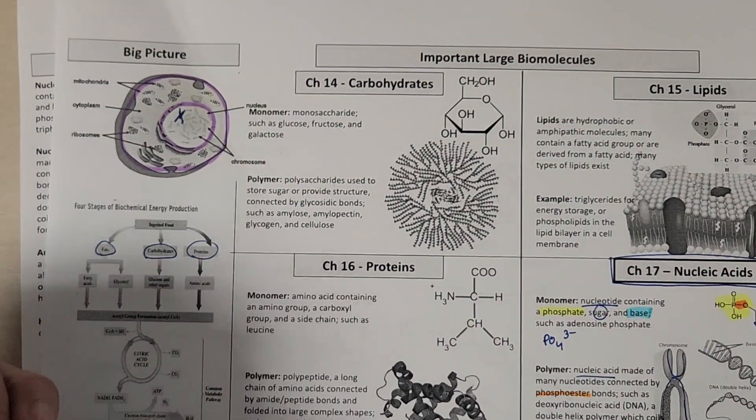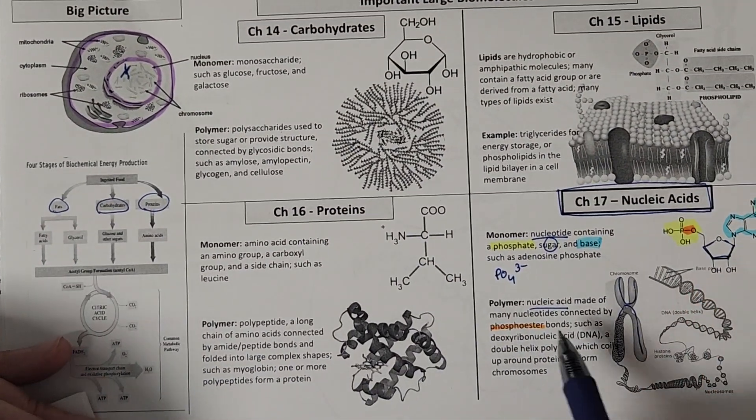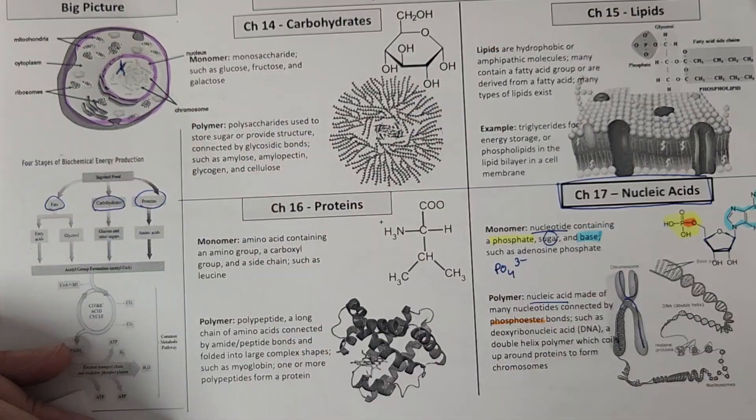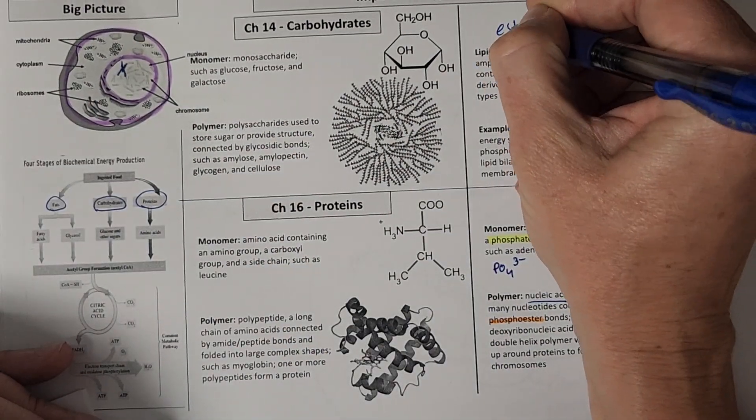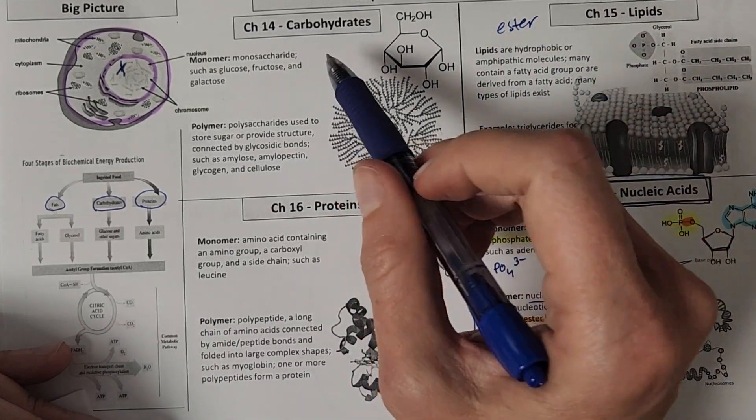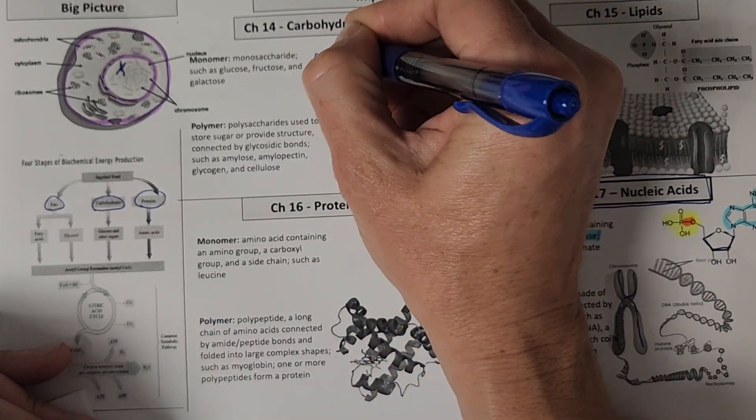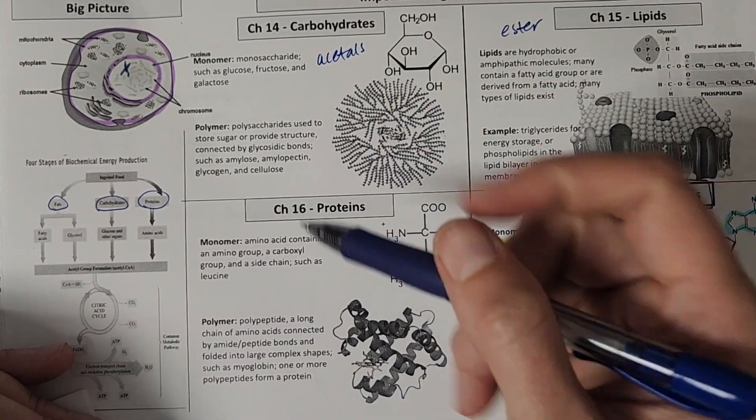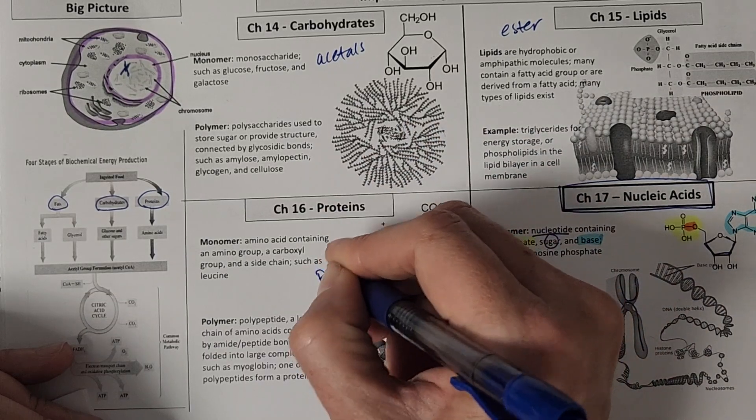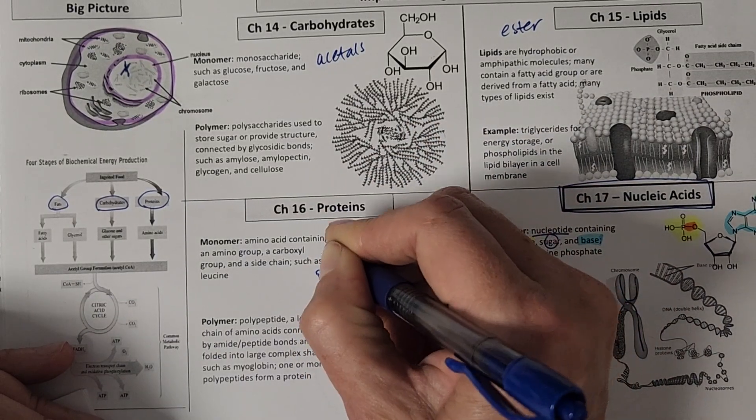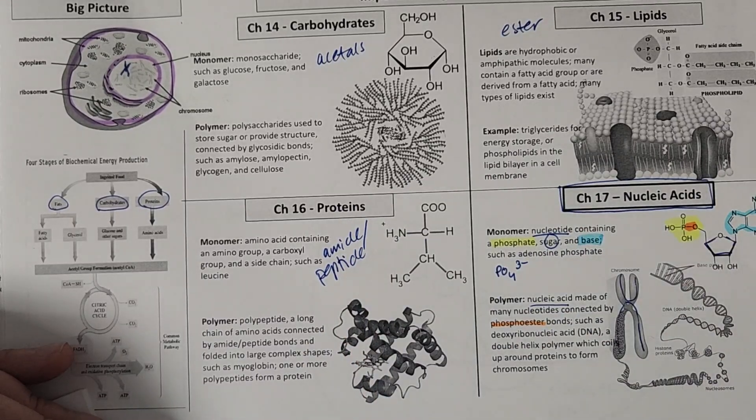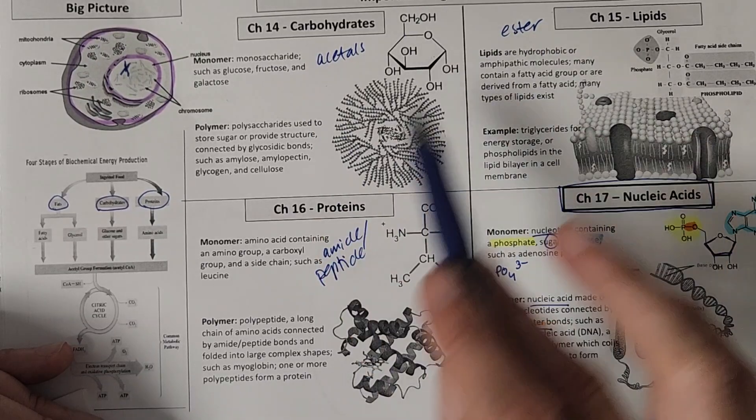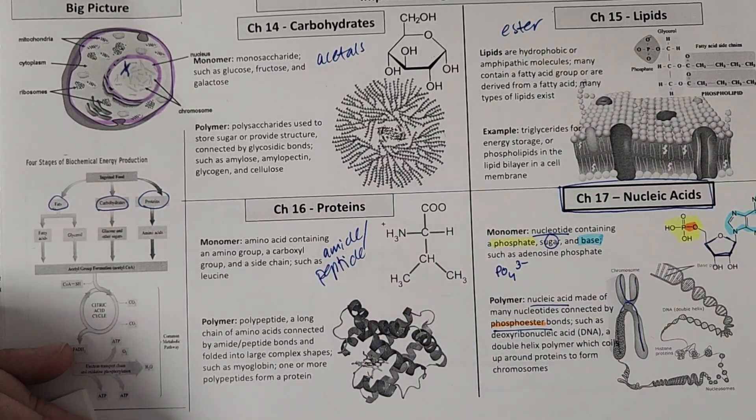And I want to use that opportunity to go back here. So we have phosphoester bonds holding groups together here. With lipids, we had in some of the molecules ester bonds linking them together. In carbohydrates, we had acetals or glycosidic bonds holding those monomers together. And in proteins, we had peptide bonds or amide bonds holding those amino acids together. So we've got some different functional groups holding each of our polymers or types of molecules together.